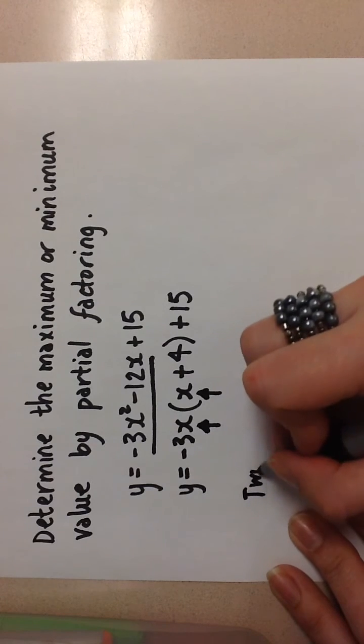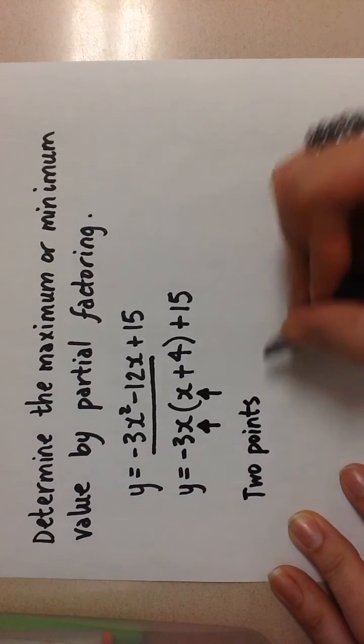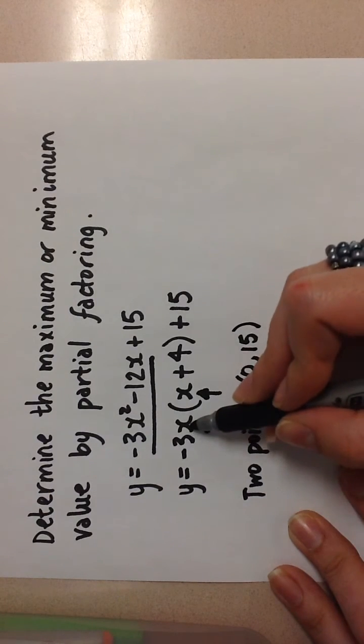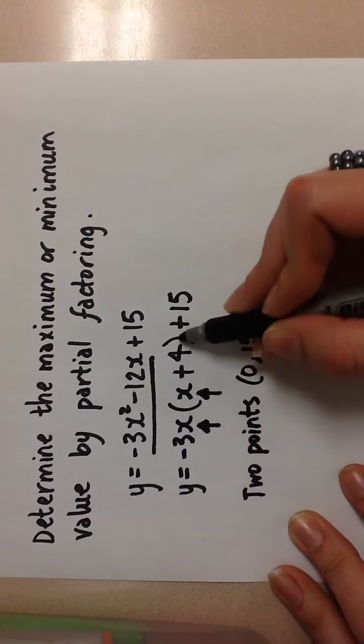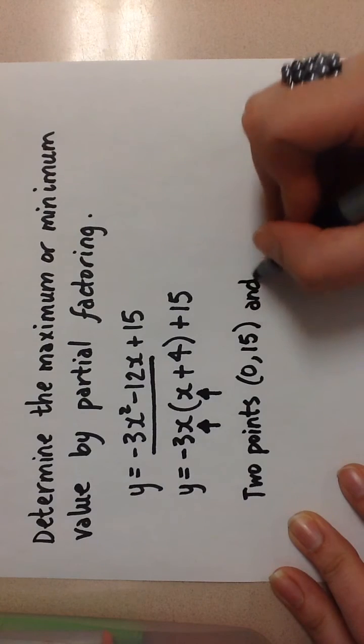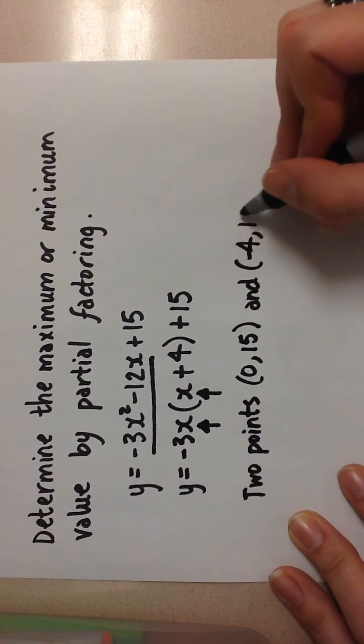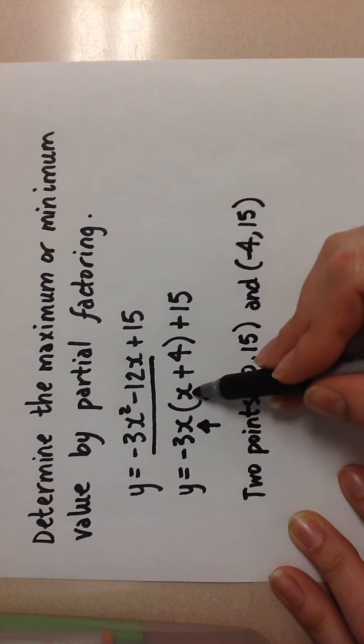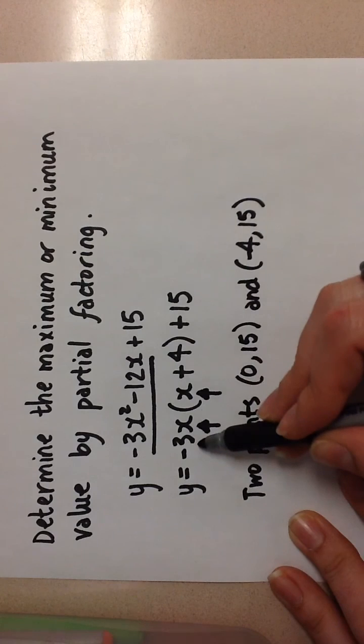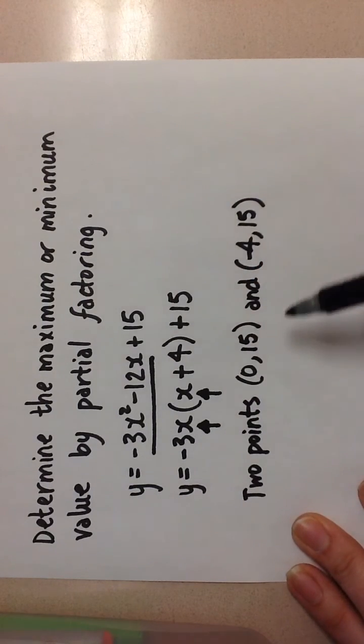So my two points on the parabola are going to be (0, 15), because when I plug a 0 in here, this cancels and I'm left with y = 15. And my other point will be (-4, 15). When I plug in -4 here, this becomes 0, which eliminates this portion of the equation, and I'm left with 15 also. Now because I